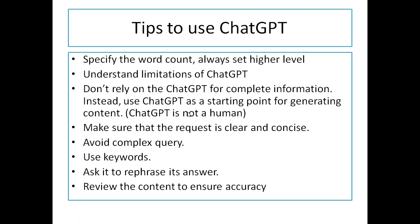For complex applications, you can use ChatGPT as a starting point for generating initial content. Your request must be clear and crisp — do not use complex queries. Use proper keywords to guide ChatGPT for generating the response; more relevant keywords will get you a better response. If your response is not satisfactory, you can ask it to replace the information. You should also manually review the content to check whether it is giving accurate information.